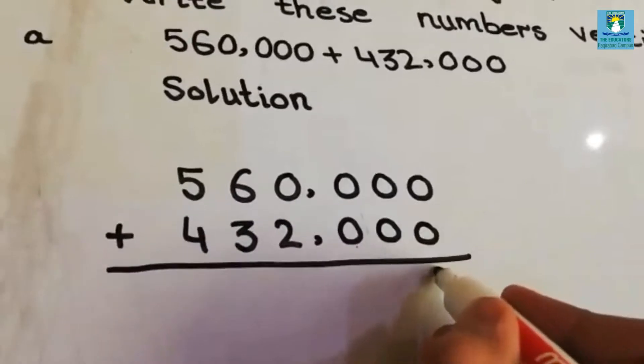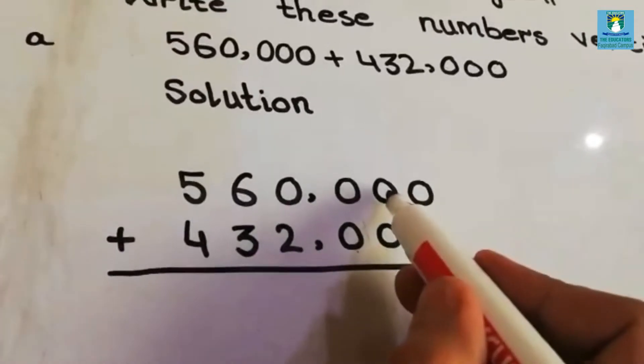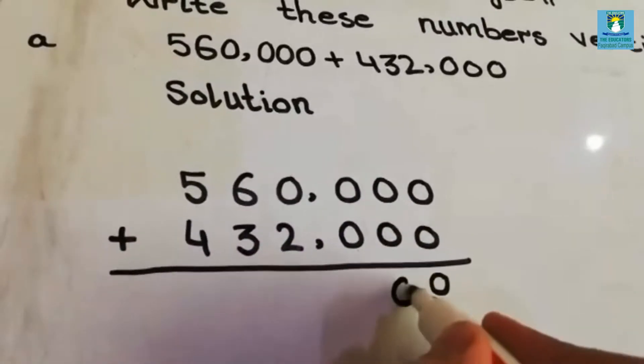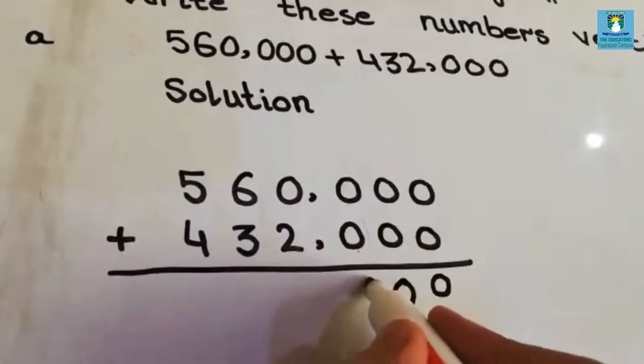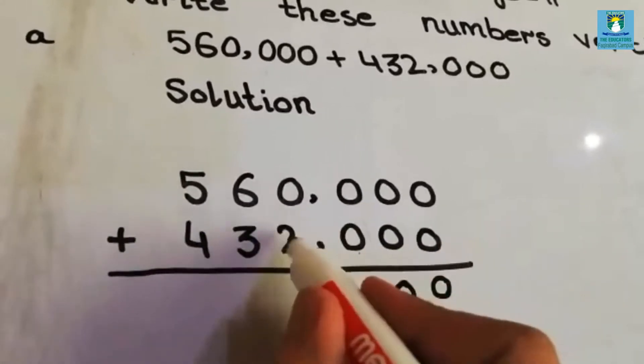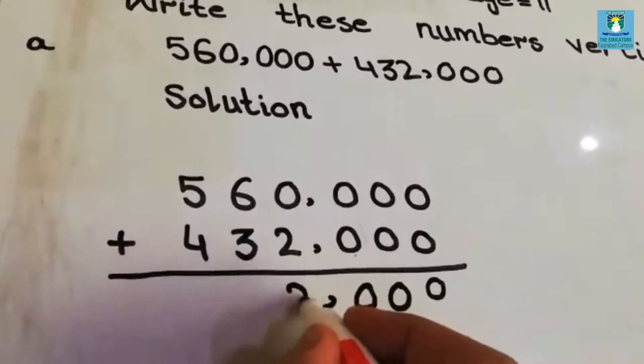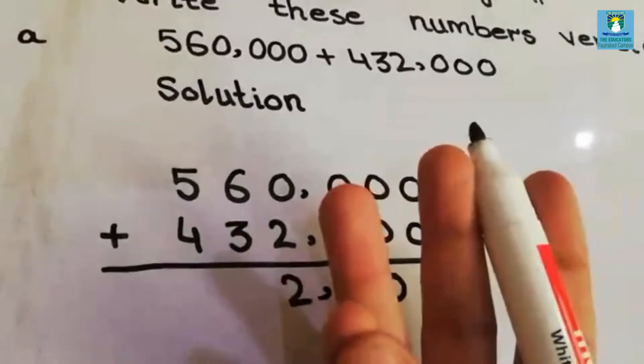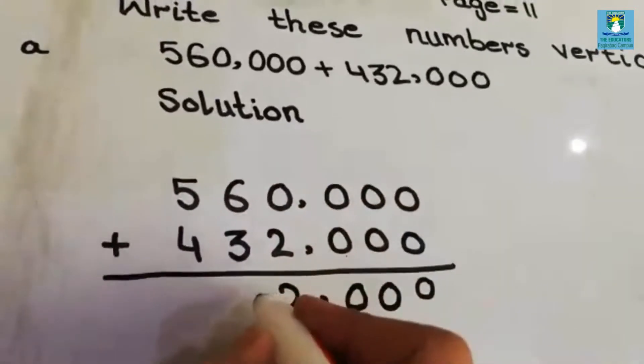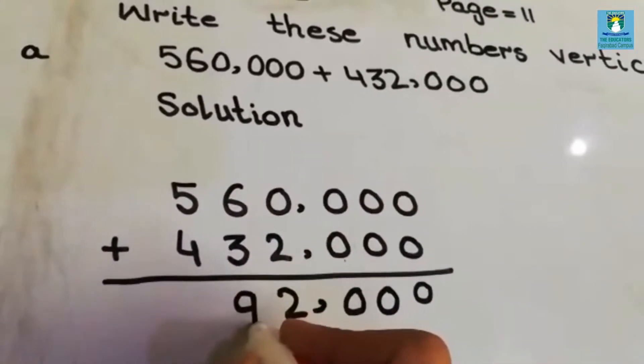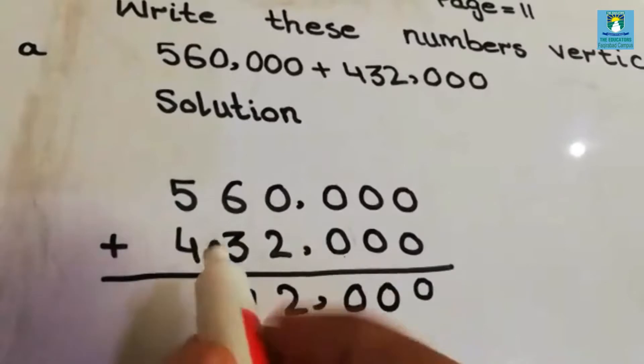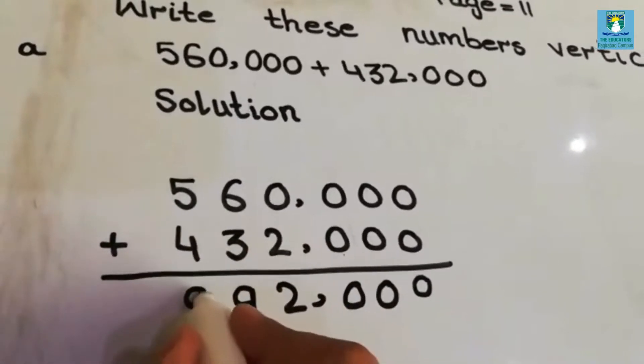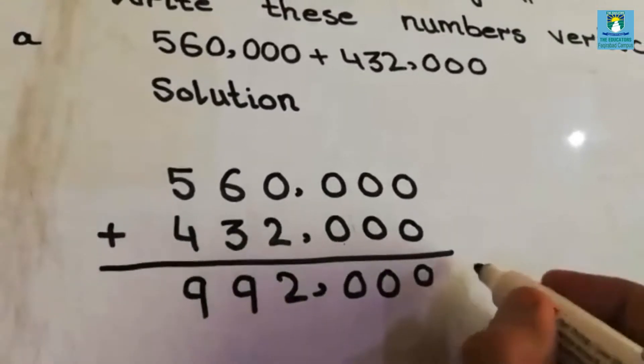So we will start from units: 0 plus 0 is 0, 0 plus 0 is 0, 0 plus 0 is 0, 0 plus 2 equals 2, 6 plus 3 is 9. Look right here, 5 plus 4 is 9. It will be your answer.